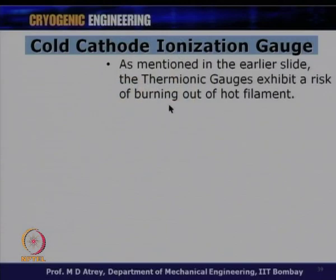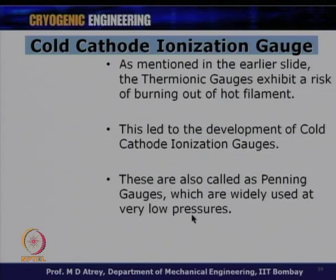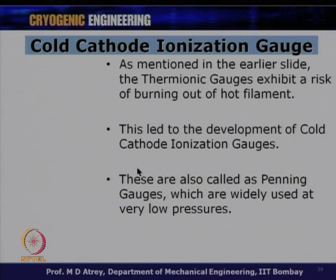The cold cathode ionization gauge, also called the Penning gauge, was developed to overcome the filament burn-out problem of thermionic gauges. It is widely used at very low pressures. In practice, Pirani and Penning gauges are used together: Pirani measures up to 10⁻³ millibar, and from 10⁻³ to 10⁻⁷ the Penning gauge takes over. This Pirani-Penning combination is commonly found on every vacuum equipment.